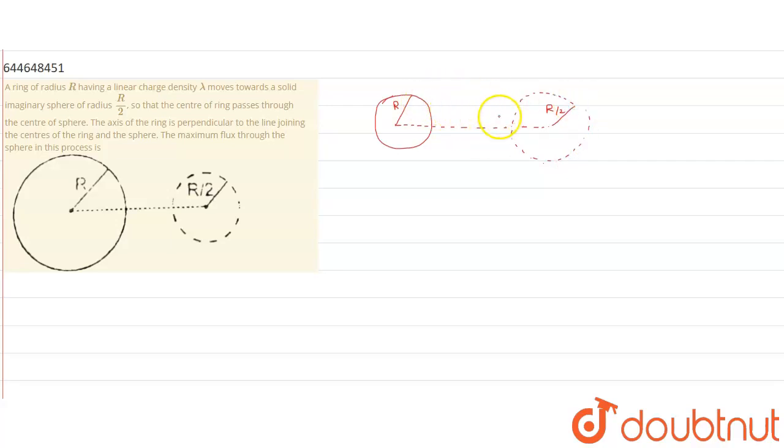So, as you can see that center of ring passes through center of sphere. The axis of ring is perpendicular to the line joining center of ring and sphere. That means roughly I am drawing that. Here is another ring is passing through this side.